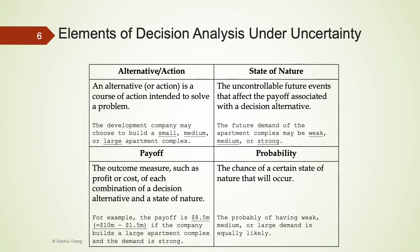An alternative is a course of action intended to solve a problem. In our example, the company may choose to build a small, medium, or large apartment complex. There is a total of three alternatives.